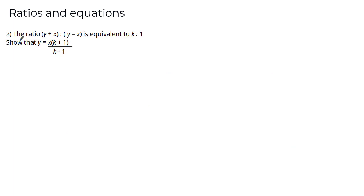Let's use these methods for exam questions. We're told the ratio (y + x) to (y − x) is equivalent to k to 1, and we're asked to show that y = x(k + 1)/(k − 1). Pause the video to have a go, then come back to check the solution.